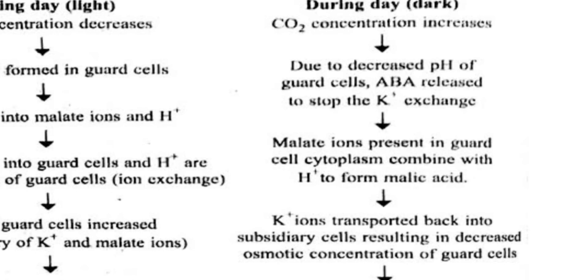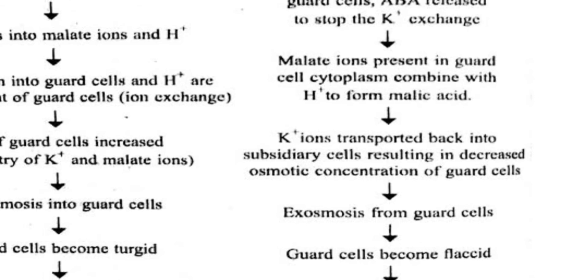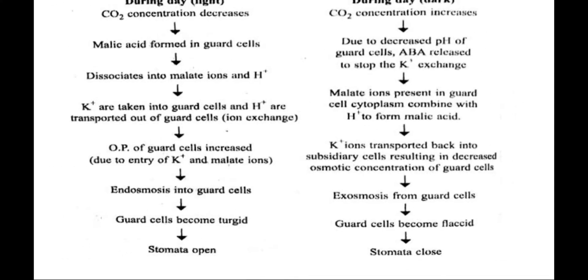During the night, CO2 concentration increases because no photosynthesis occurs. As a result, pH of the guard cell decreases — it becomes acidic — and abscisic acid is released, which changes the permeability of the cell membrane and stops the potassium exchange. Malate ions present in the guard cell cytoplasm combine with hydrogen to form malic acid. Potassium ions are then transported back into the subsidiary cell, resulting in decreased osmotic concentration of the guard cell, followed by exosmosis, and the guard cell becomes flaccid, leading to closing of the stomata.